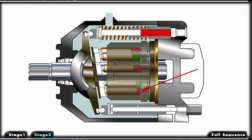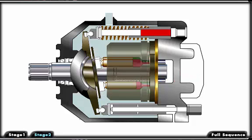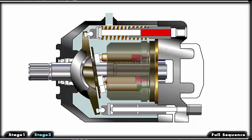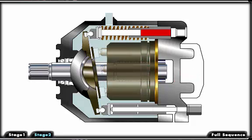In the other half of the rotation, the piston moves into the cylinder barrel and generates a decreasing volume. This reciprocating motion draws fluid in and pumps it out.